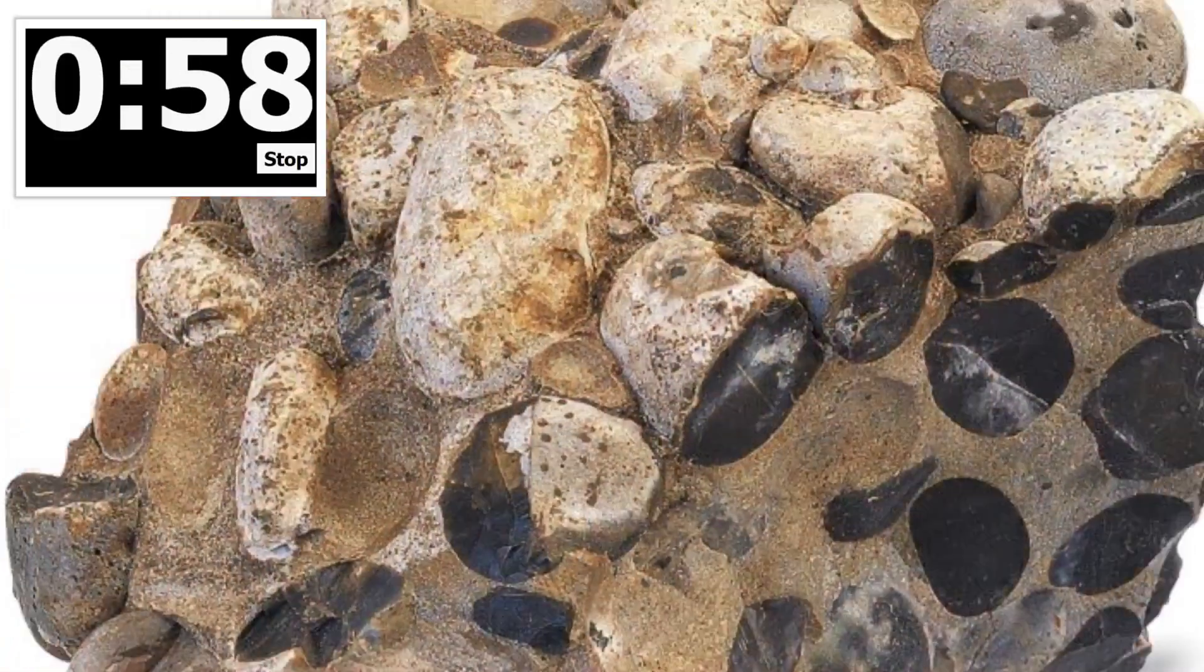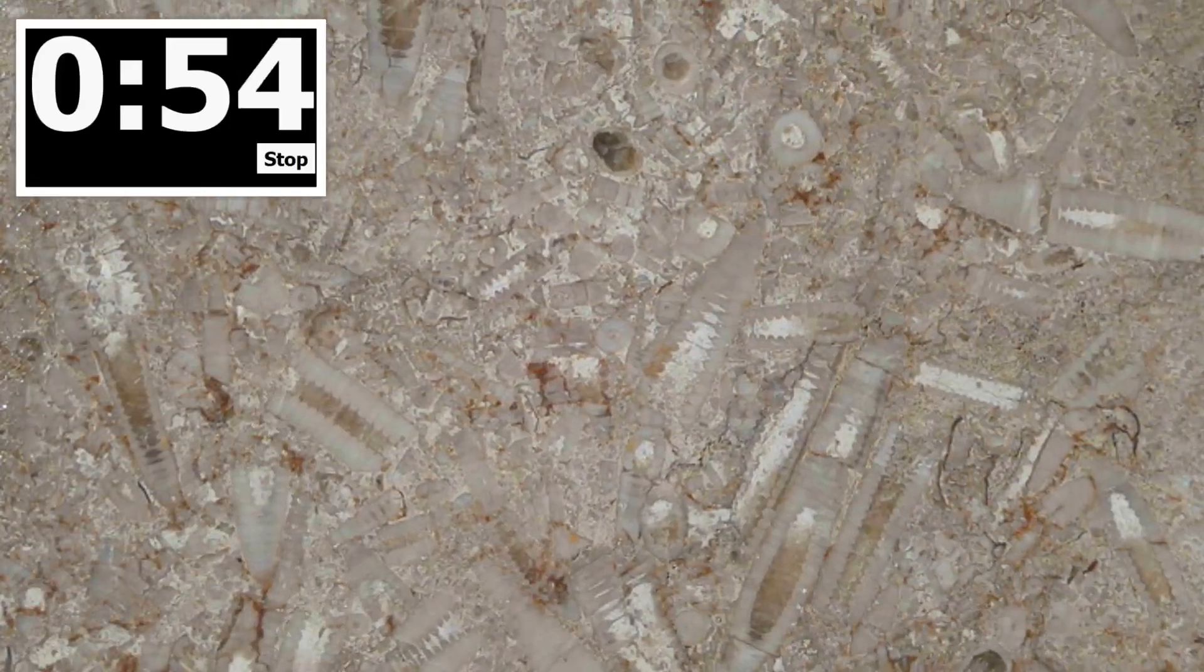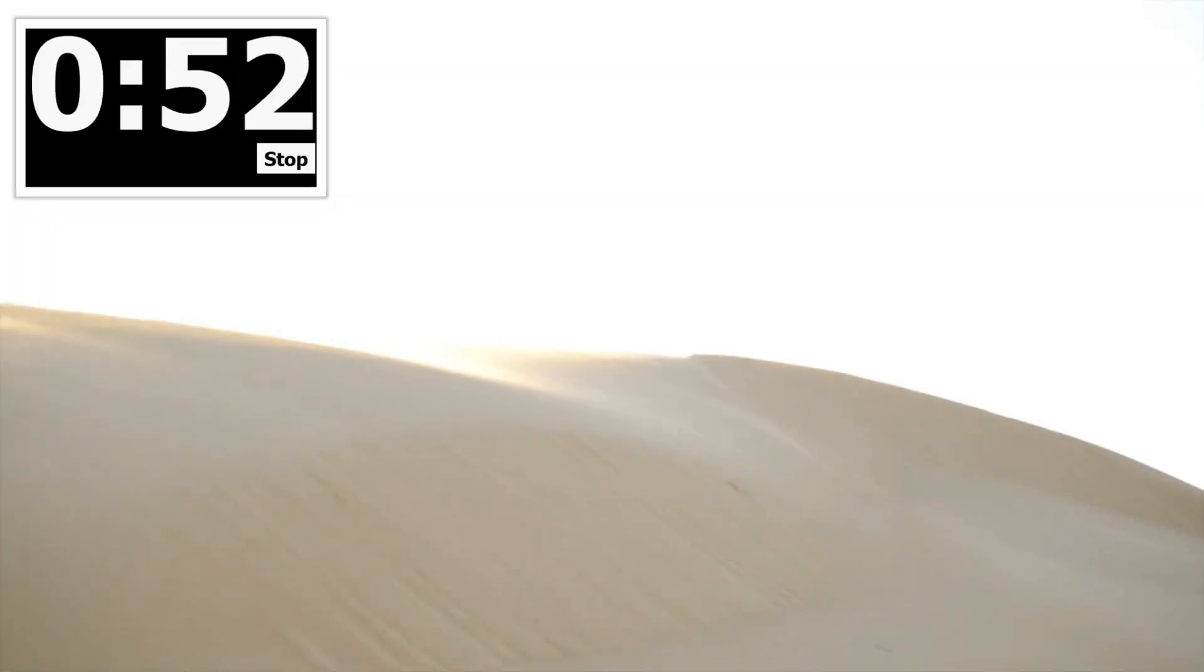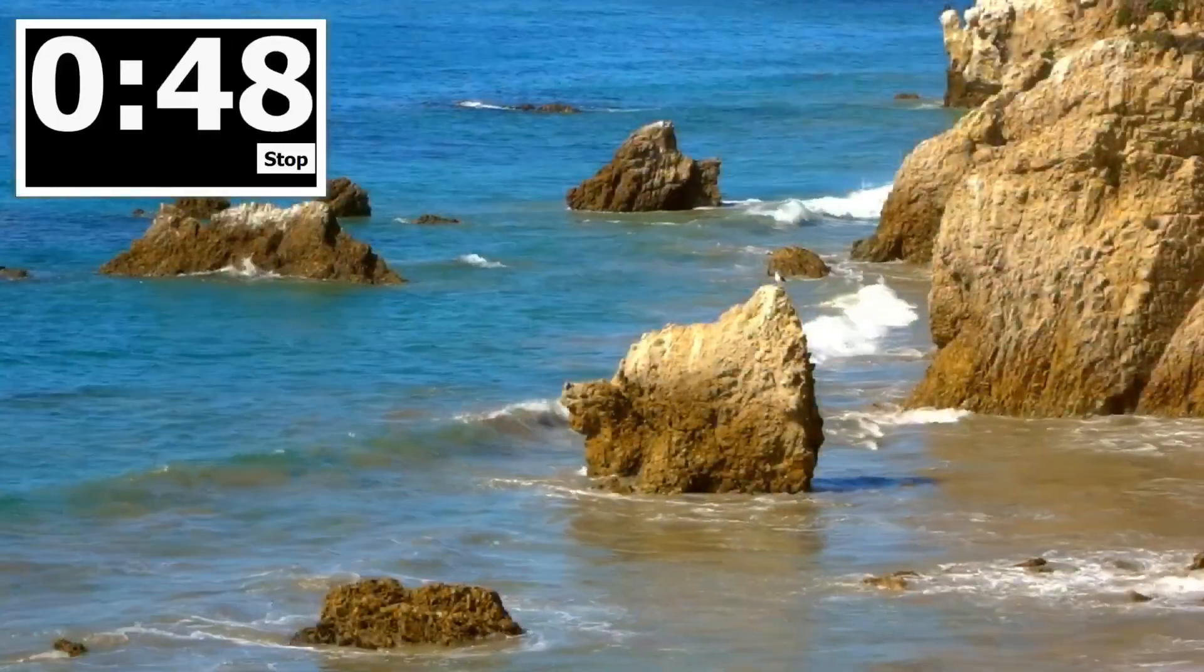Sedimentary rocks are one of three types of rock and they are formed by the deposition of material on the earth's surface. Sedimentary rocks can be formed in all types of environments from deserts to lakes, rivers, around glaciers, and from the beach all the way to the deep oceans.